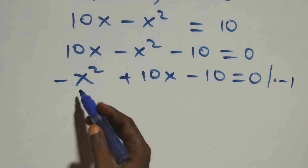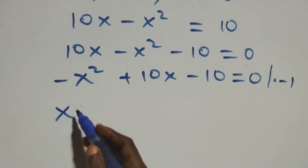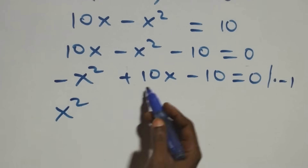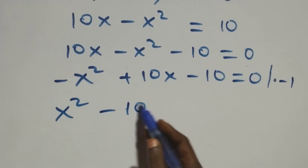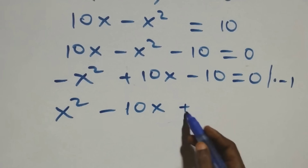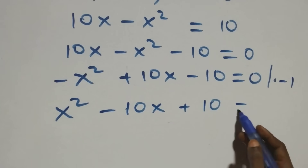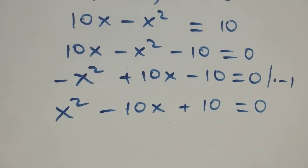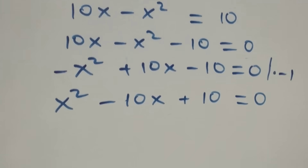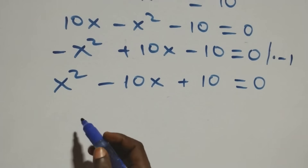This becomes plus x squared, minus ten x, and plus ten, now equals to zero. So we have a quadratic equation.